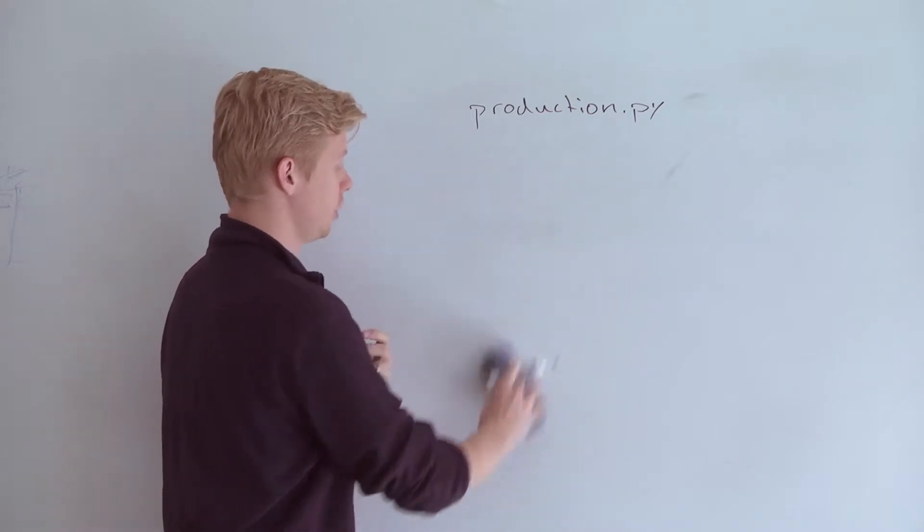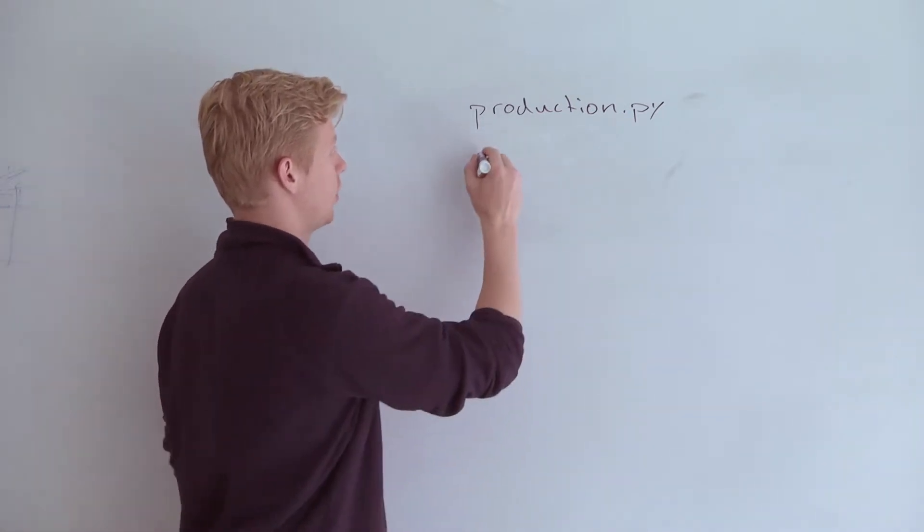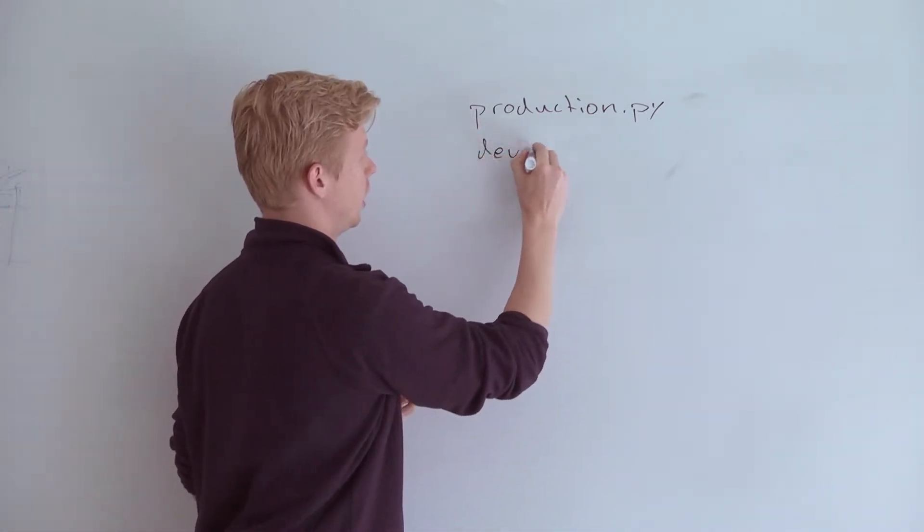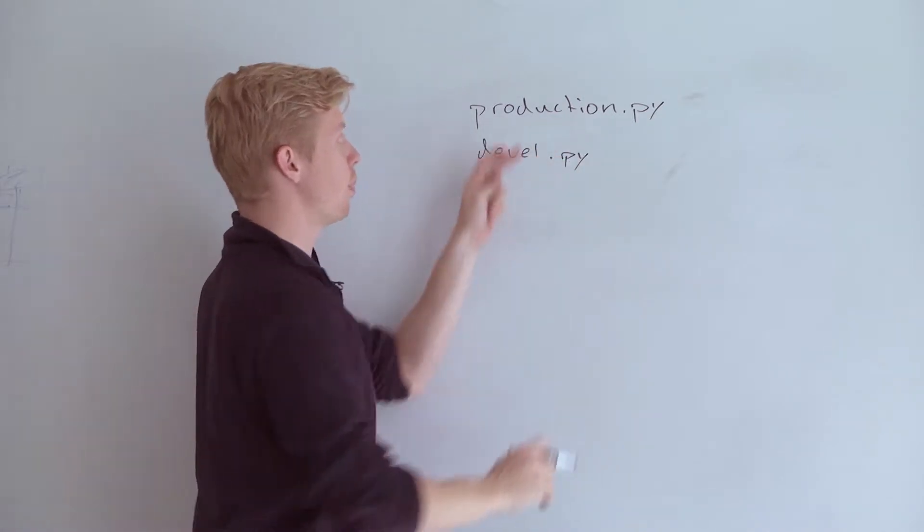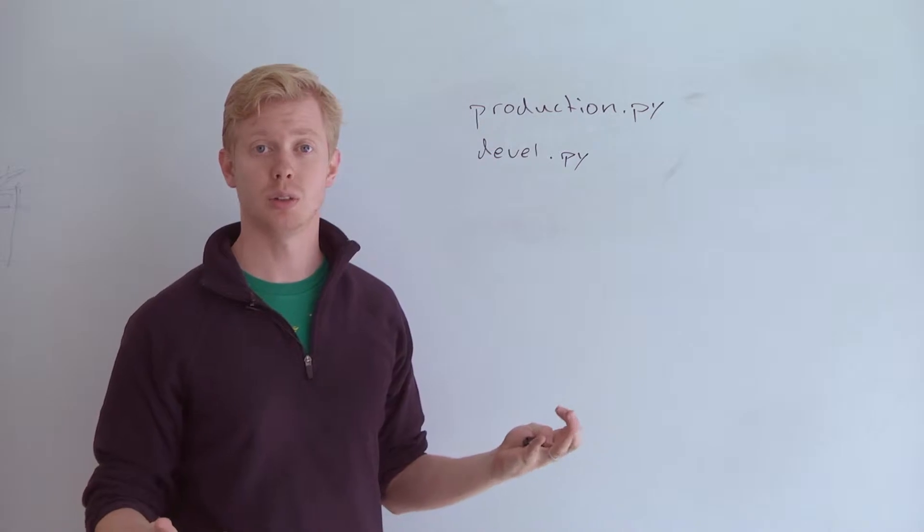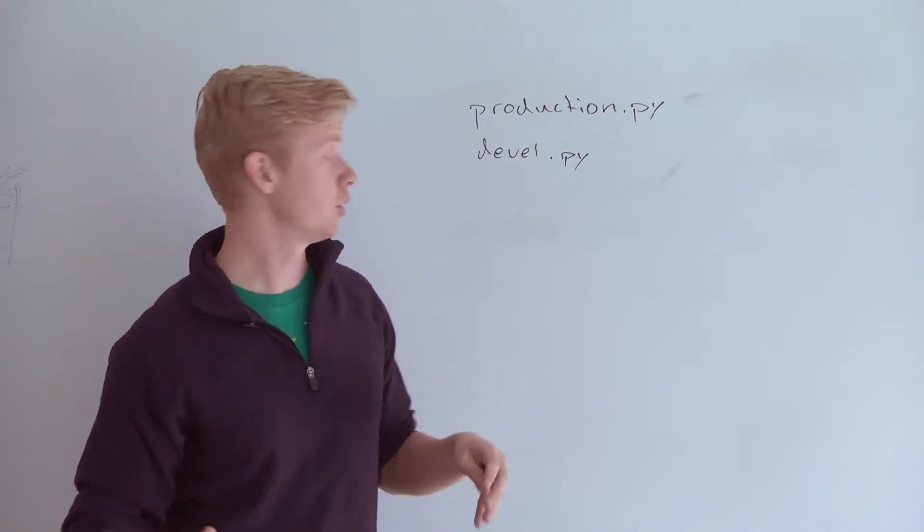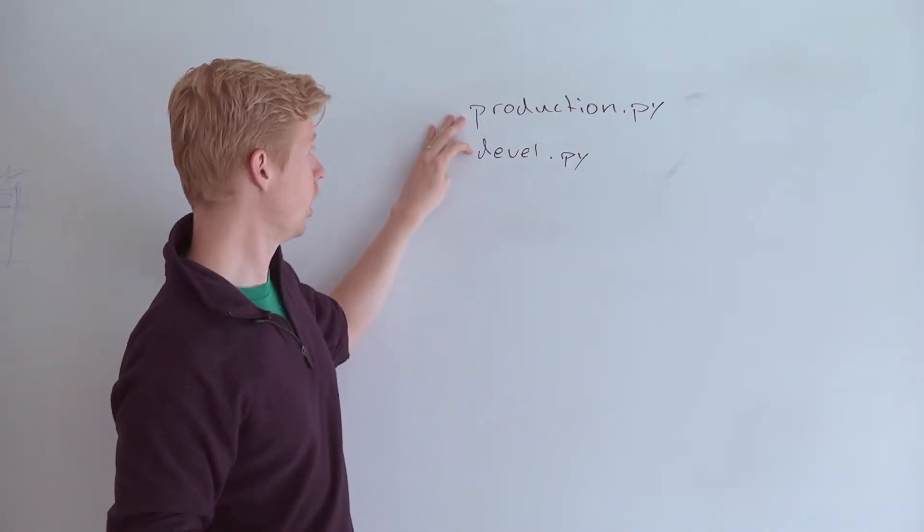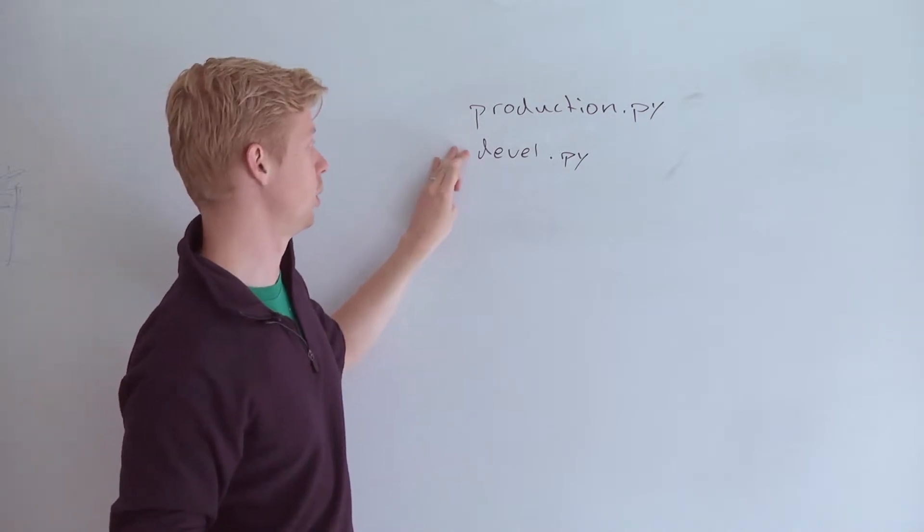Sometimes what we do is, in the simple case, we just have production.py, we'll have develop.py. And these both basically have a bunch of global variables. Things like secret keys that you're going to use for your cookies or your passwords, that sort of thing. And we'll have one that's only used in production and one that's only used in development.